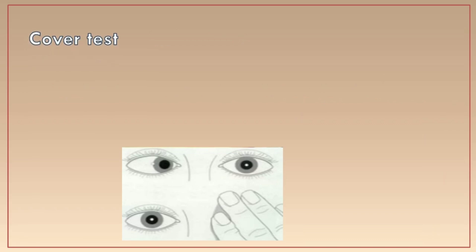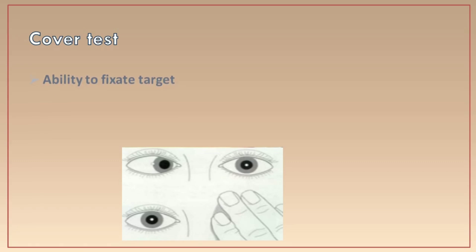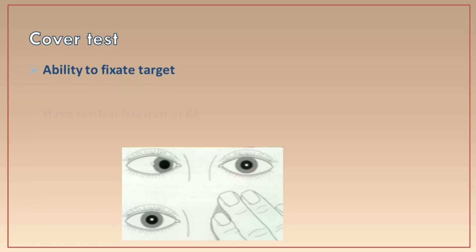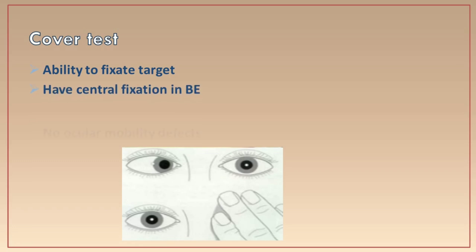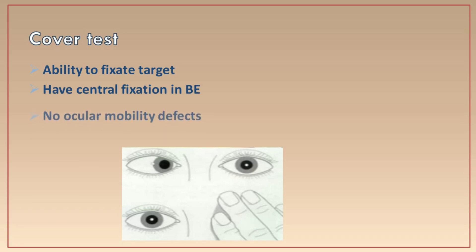For the cover test, certain prerequisites are required. The patient should have the ability to fixate on the target at both distance and near. There should be central fixation in both eyes with no eccentric fixation. There should be no restriction of movement — no limitation in adduction or abduction. Finally, the vision should be greater than 6/36 in both eyes.